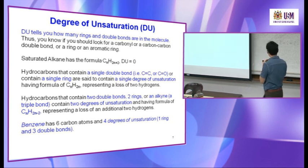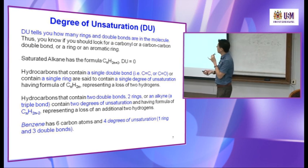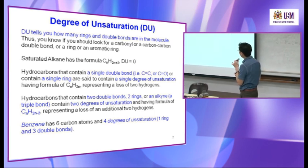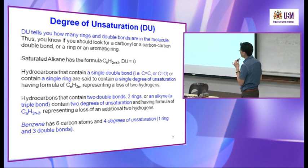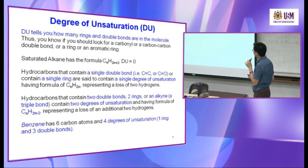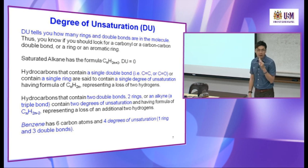Counting 1, 2, 3, 4, 5, 6, 7 — position 2 has a methyl group and position 5 has a methyl group. So the name is 2,5-dimethyl-3-heptyne.